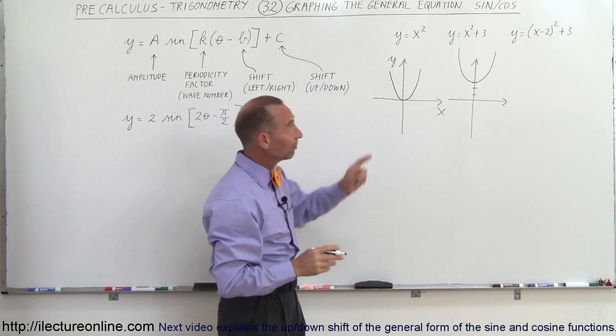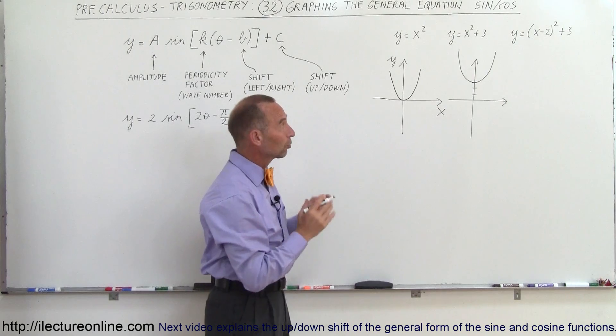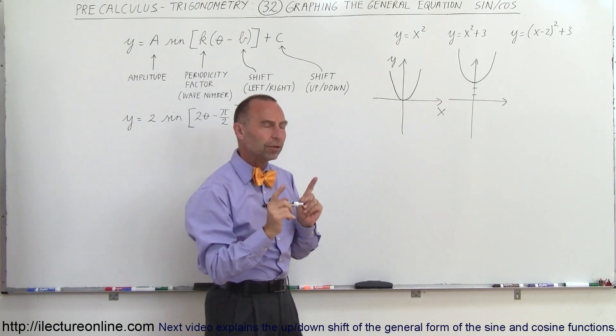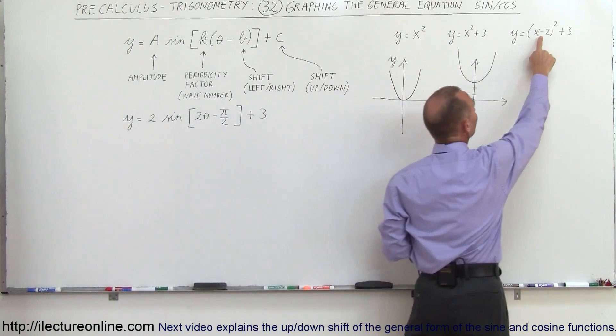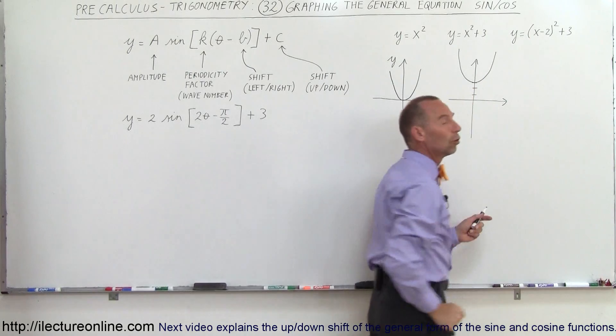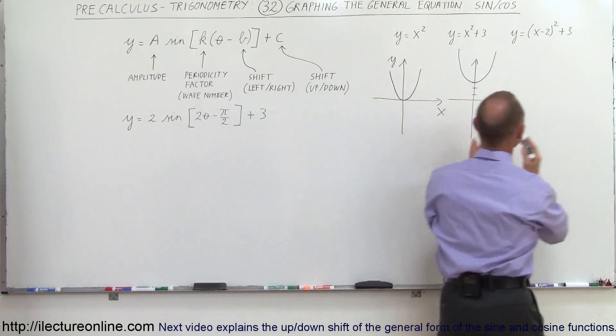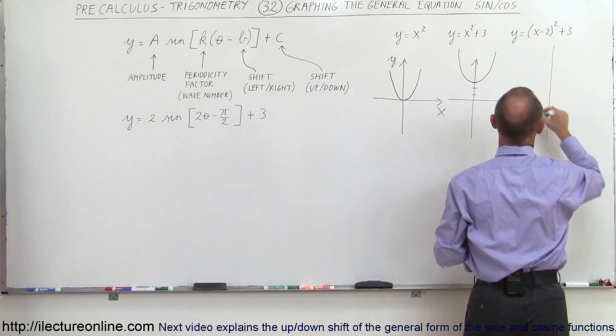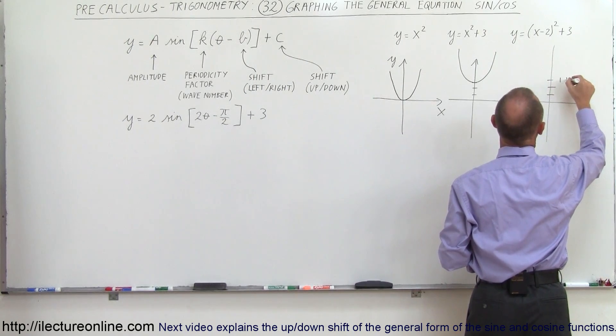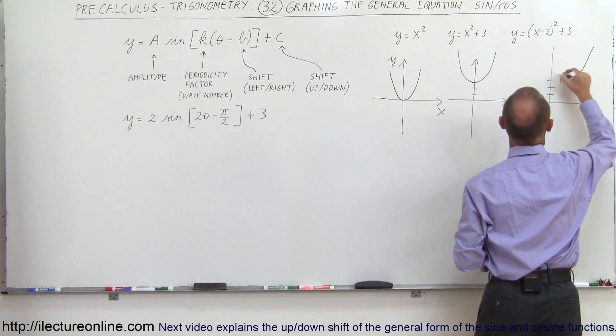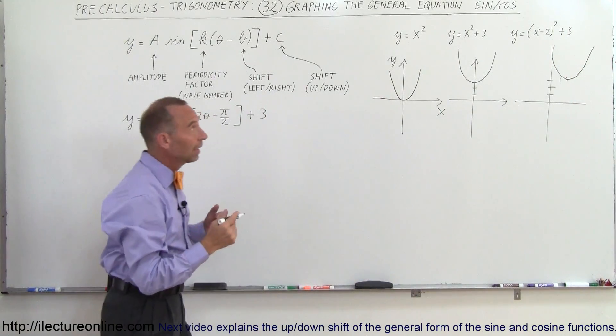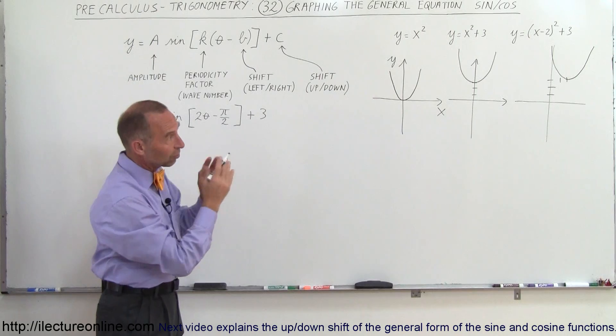And then finally someone said well what if the function looks like that, y equals the quantity x minus 2 squared plus 3? Then you realize everything is shifted. In this case if the sign is a negative that means it shifted to the right. If this sign is positive that means it shifted to the left. So in this case it would mean that we shifted to the right and so the parabola would then look like this: 1, 2, 3, 1, 2 and the vertex would be over here. So that's how we would graph the function y equals x squared. The first one shifted up, the second one shifted to the right.